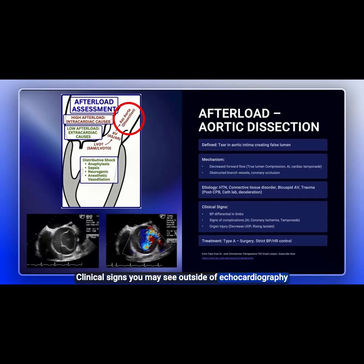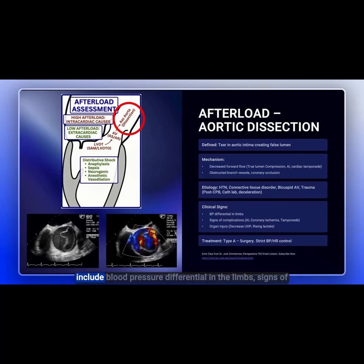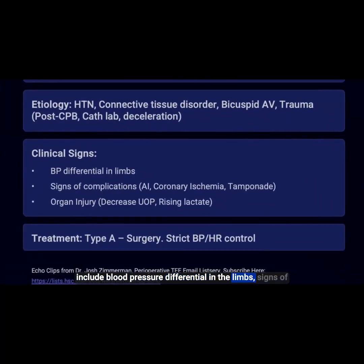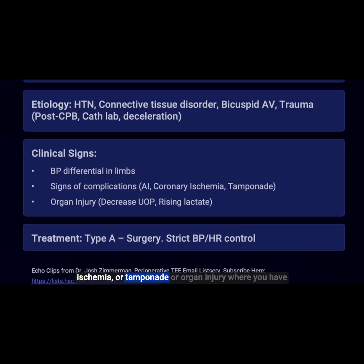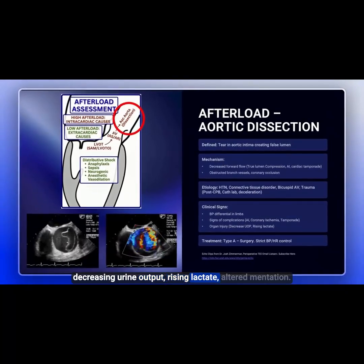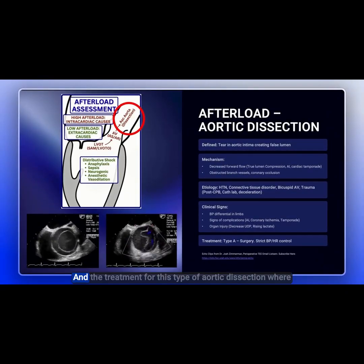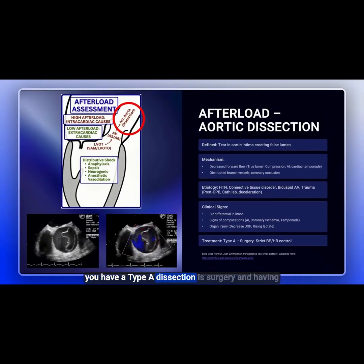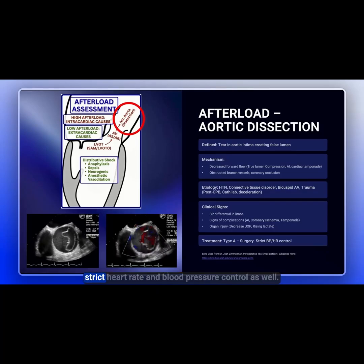Clinical signs outside of echocardiography include blood pressure differential in the limbs, signs of complications such as aortic insufficiency, coronary ischemia, or tamponade, and organ injury — presenting as decreasing urine output, rising lactate, and altered mentation. Treatment for a type A dissection involves surgery along with strict heart rate and blood pressure control.